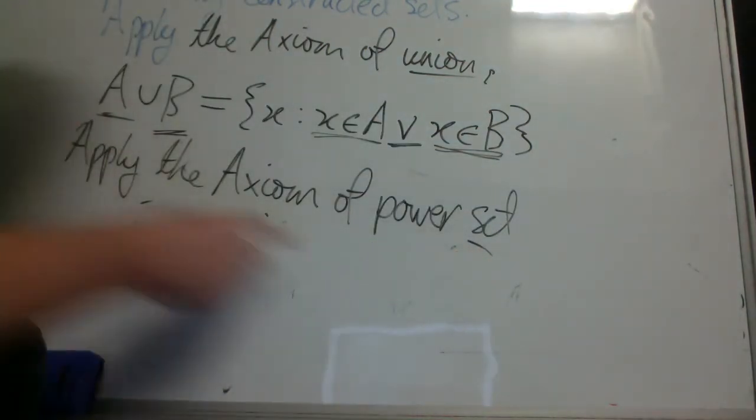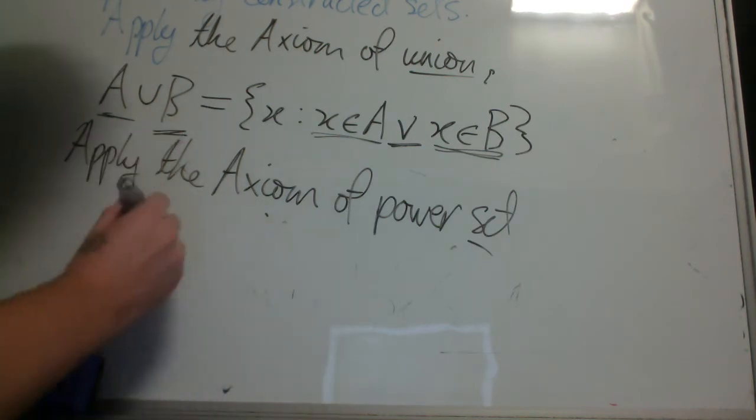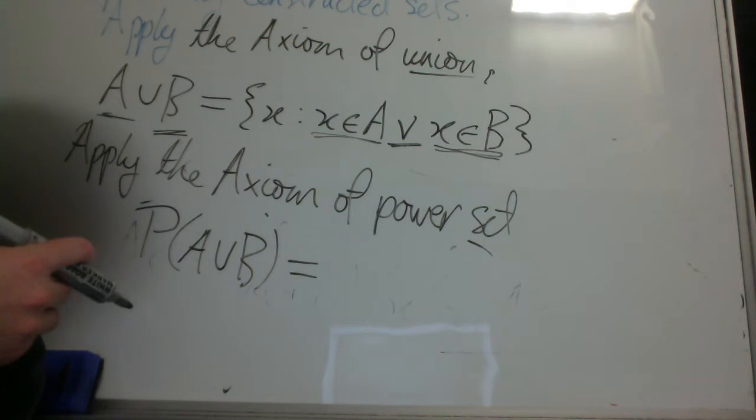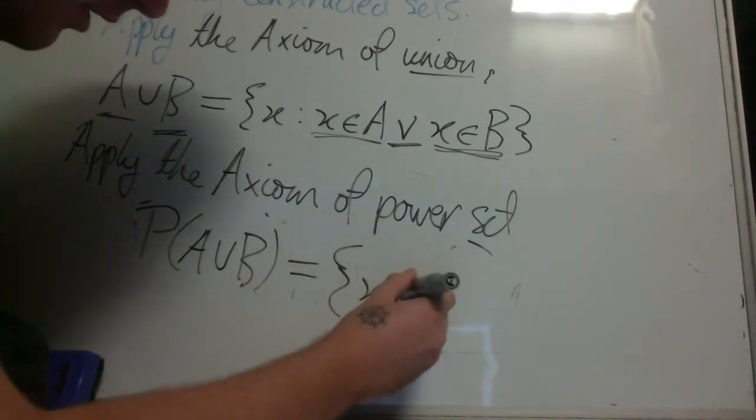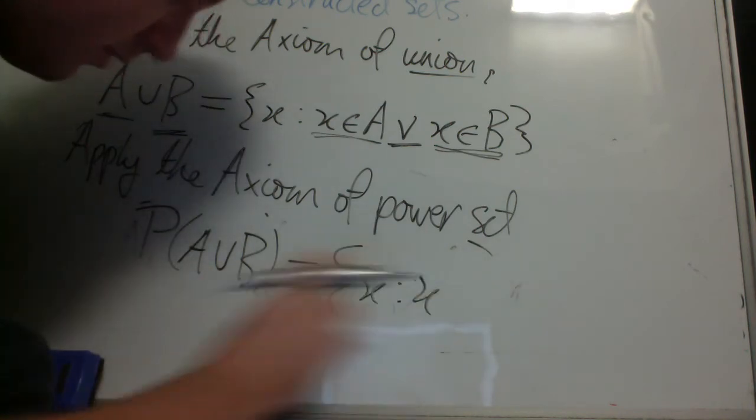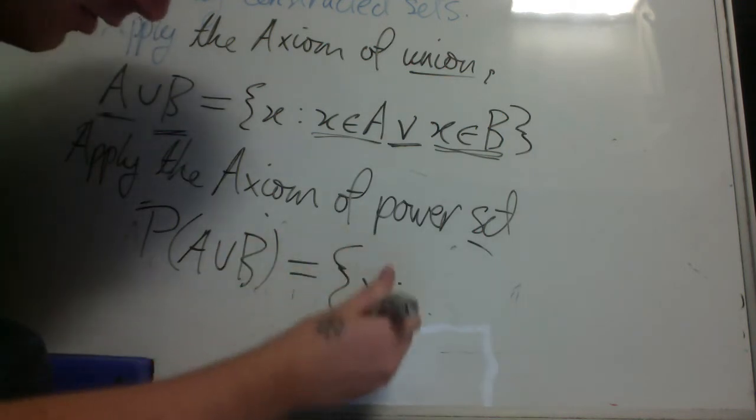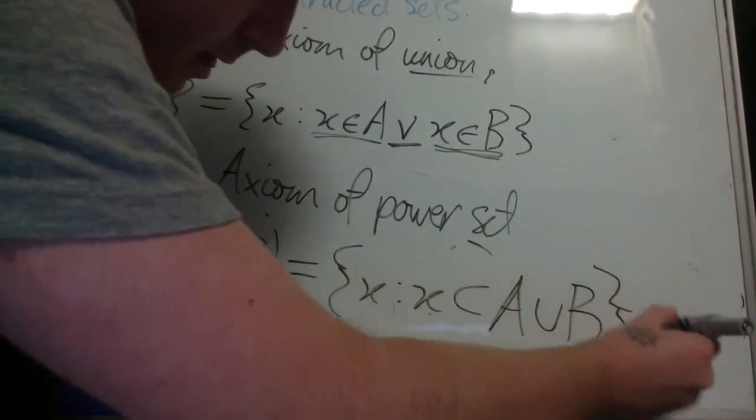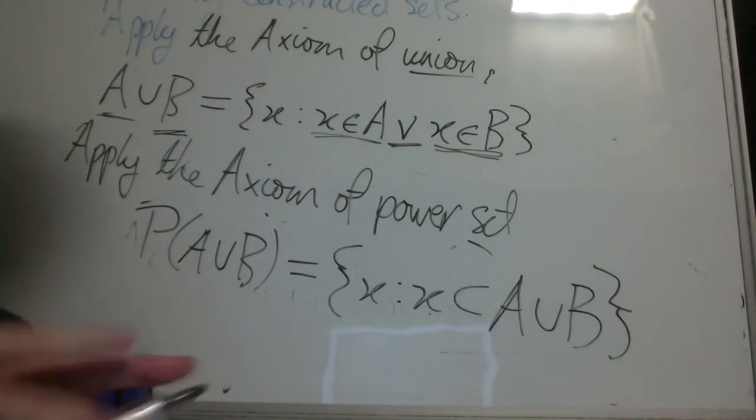So if we take the power set of the union of A and B, we get a new set, which is the set of all x such that x is a subset of the union of A and B. So let's think about what that would look like. So say A and B are the natural numbers. Then the union of A and B will still be the natural numbers, and the power set of the natural numbers will be any subset of natural numbers.